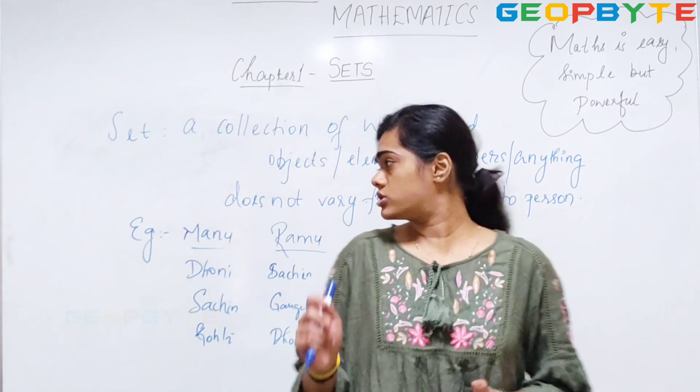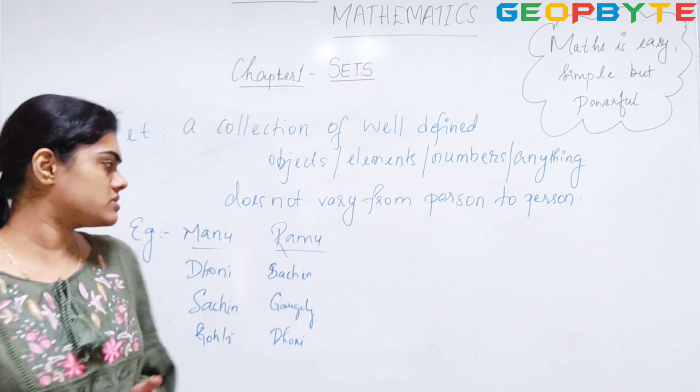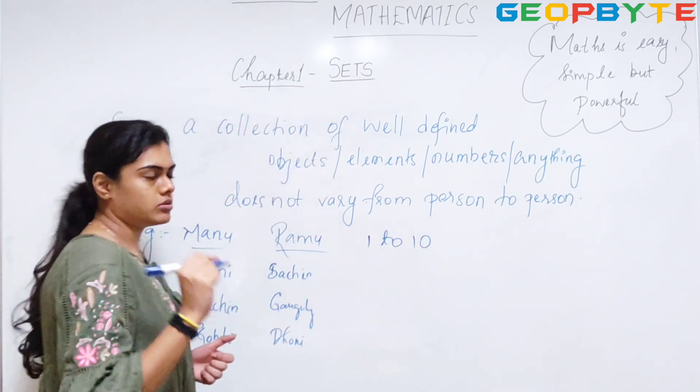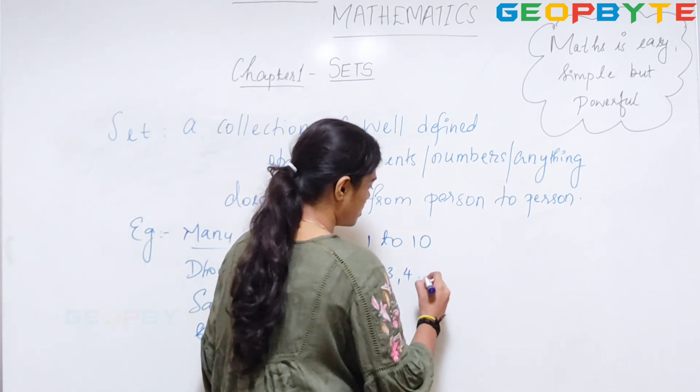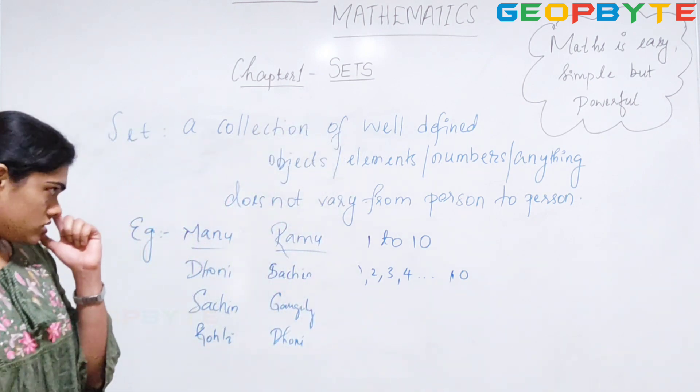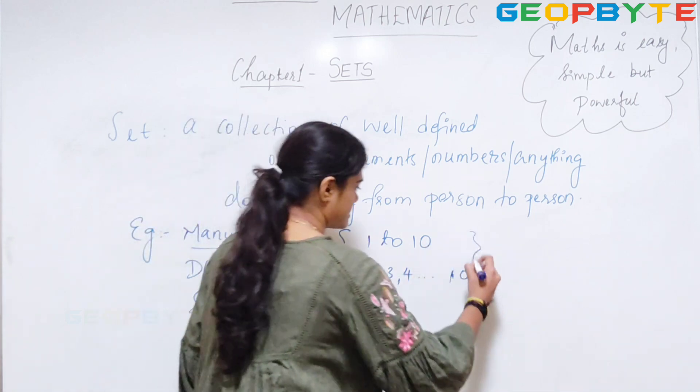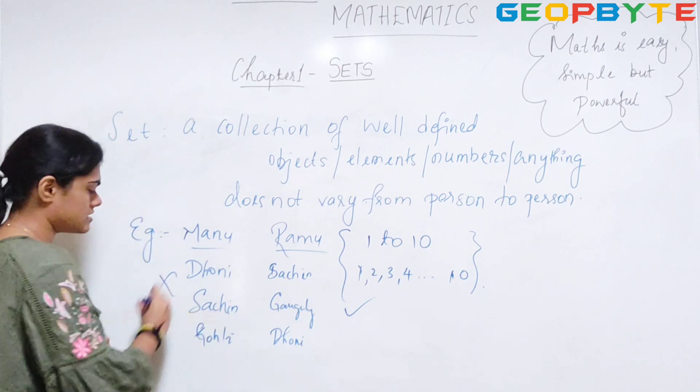But if I ask both Manu and Ramu, what are the natural numbers which lie between 1 to 10, then that would be same. That is 1, 2, 3, 4, up to 10. So this is how I define a set. According to the example, this is my set, whereas this is not.